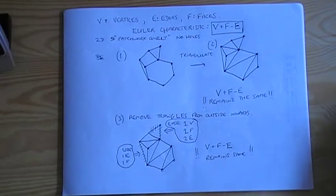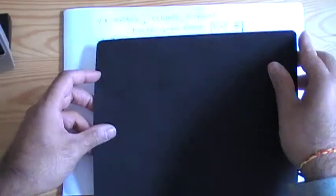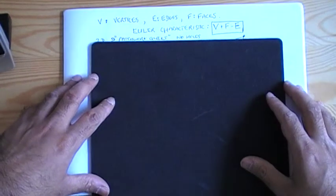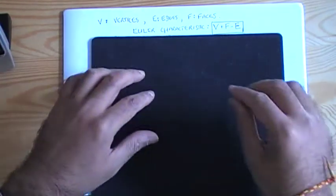In this video I'm going to tell you about something called the Euler characteristic, which is named after the mathematician Euler, who was responsible for many important developments in mathematics.